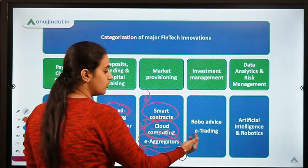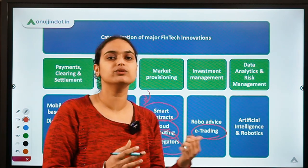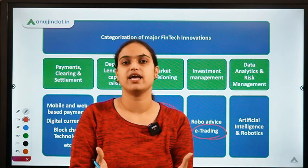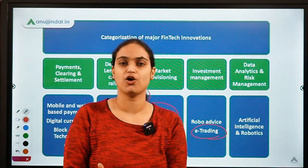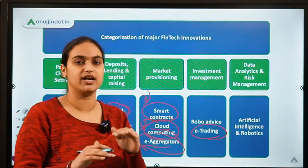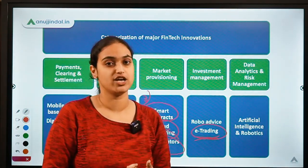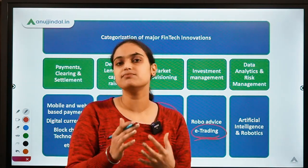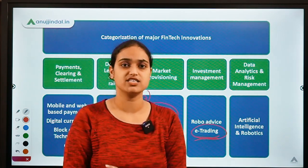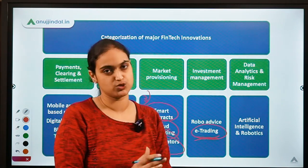Another innovation is e-trading. We can use different e-trading platforms — apps and software — to buy and sell securities or access other financial products electronically. Earlier, when the Bombay Stock Exchange existed, it followed physical means of exchange. Then we shifted to electronic platforms and dematerialization. All these are covered under financial innovations that have taken place.